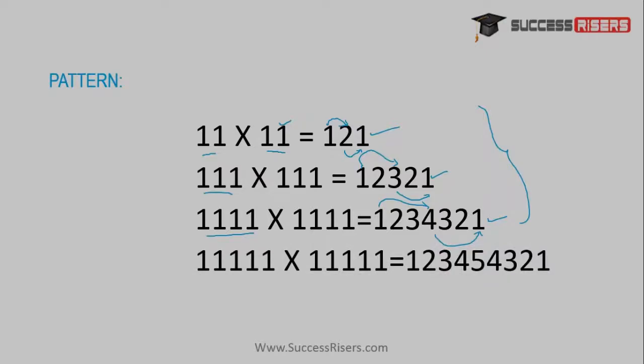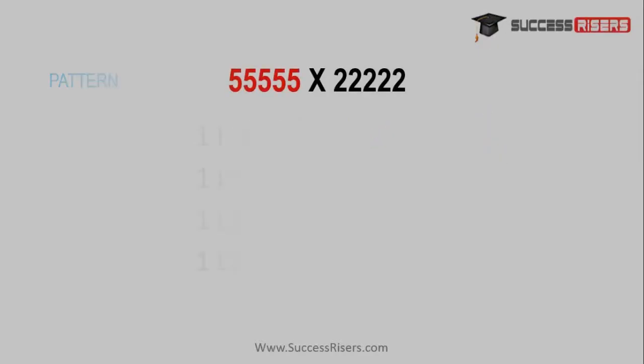So we can say if there are five digits, then the multiplication goes high up to five and then goes down up to one. Now we've learned the pattern. We will use this pattern to solve our actual problem.